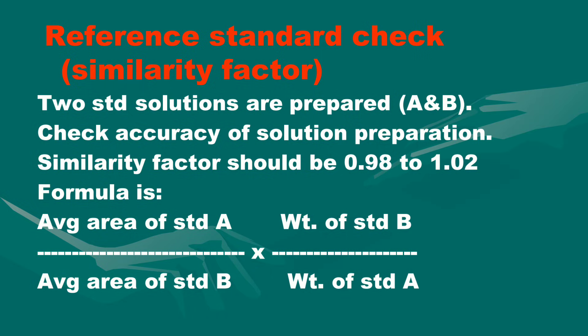Next is reference standard check, also known as similarity factor. In HPLC analysis, for the similarity factor, two standard solutions are prepared — standard A and standard B — to check the accuracy of solution preparation. The similarity factor should be 0.98 to 1.02. The formula to calculate the similarity factor is: (average area of standard A / average area of standard B) × (weight of standard B / weight of standard A).